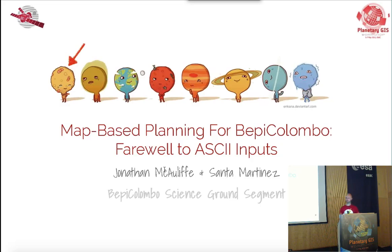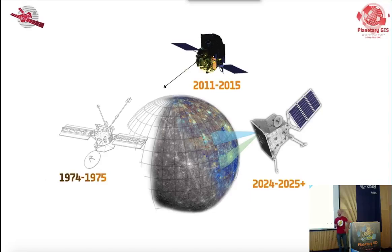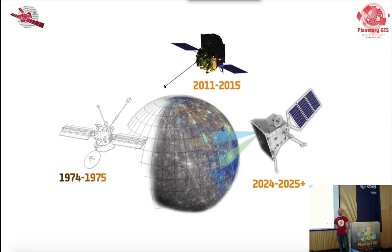We're working on a mission called BepiColombo, and BepiColombo is going to go to Mercury. It will only be the third mission to go to Mercury. In the 70s, Mariner performed three flybys in 74 and 75. Then over 35 years later, the NASA mission Messenger arrived and spent four years in operation around Mercury. Last Thursday, Messenger impacted the surface of Mercury, ending what was a spectacular mission.